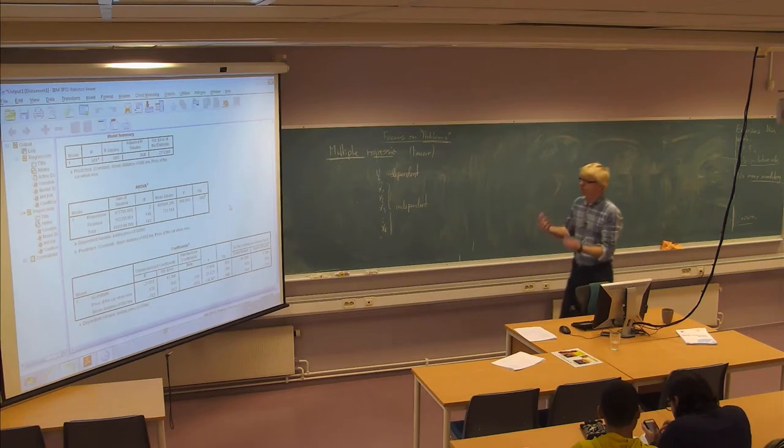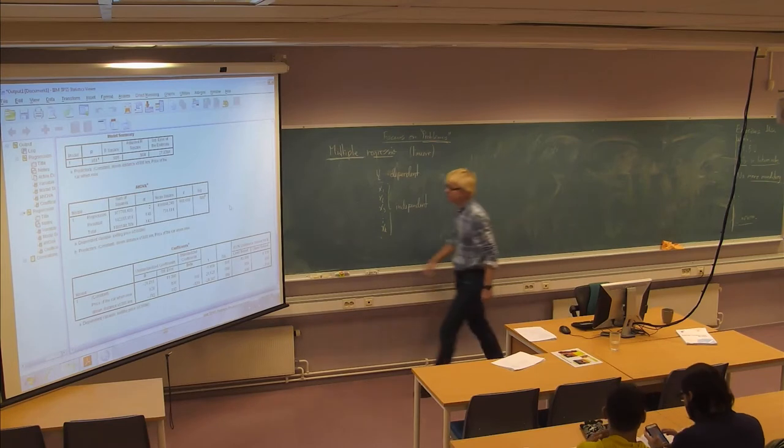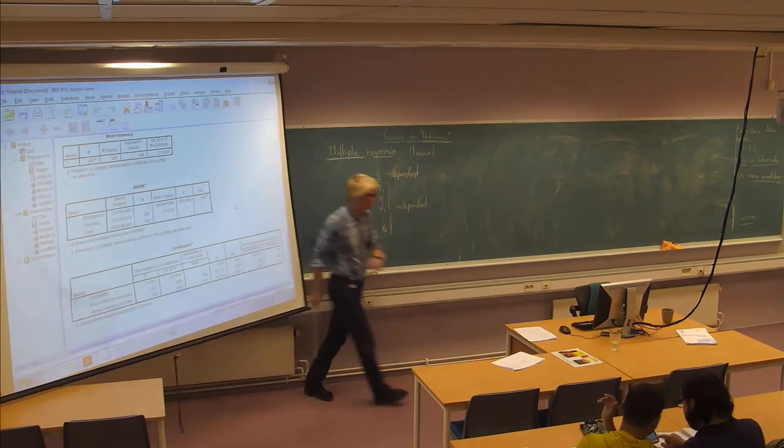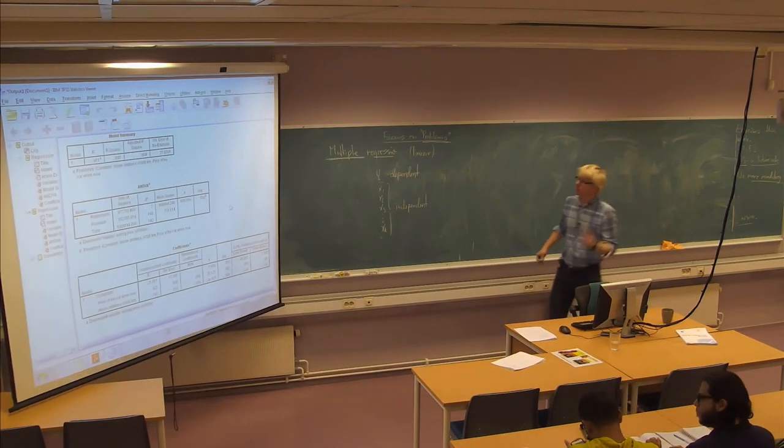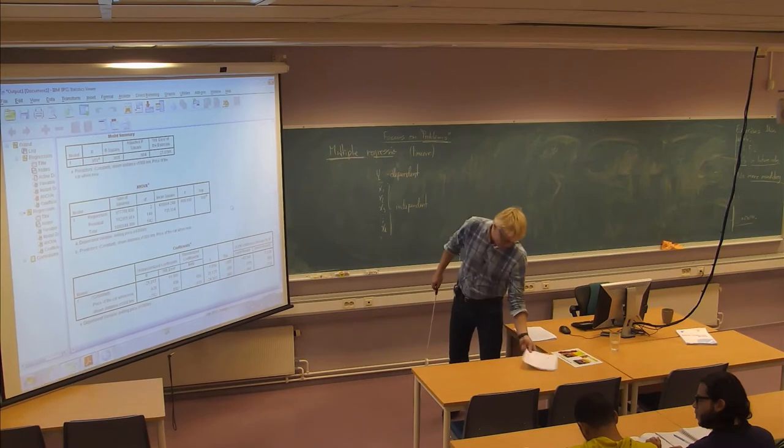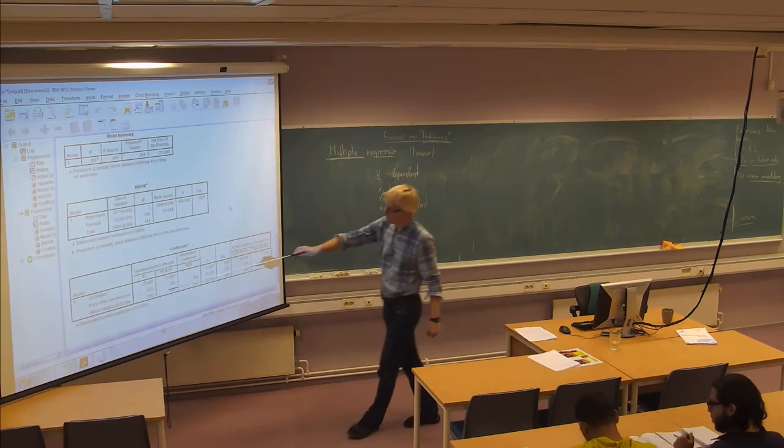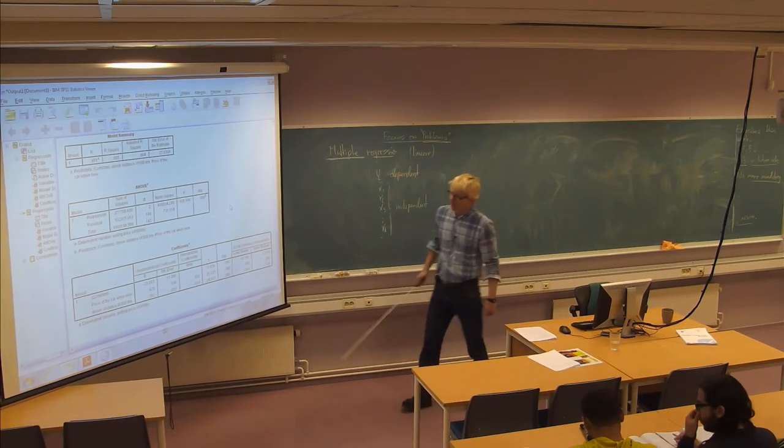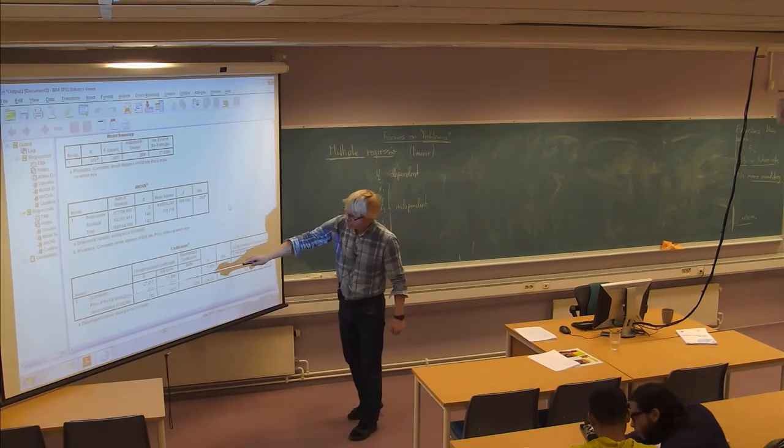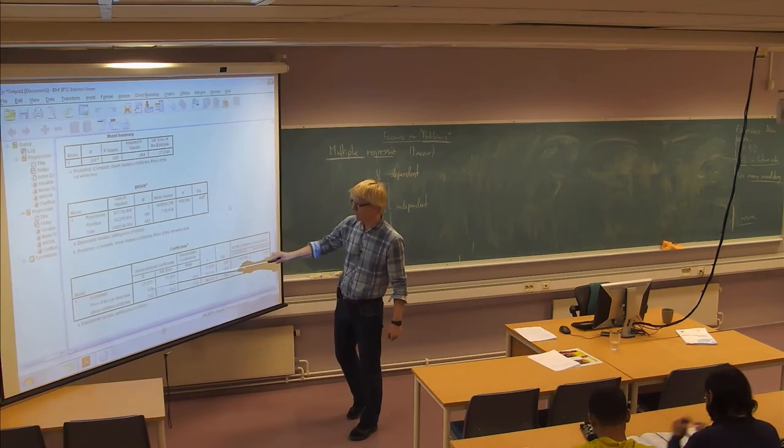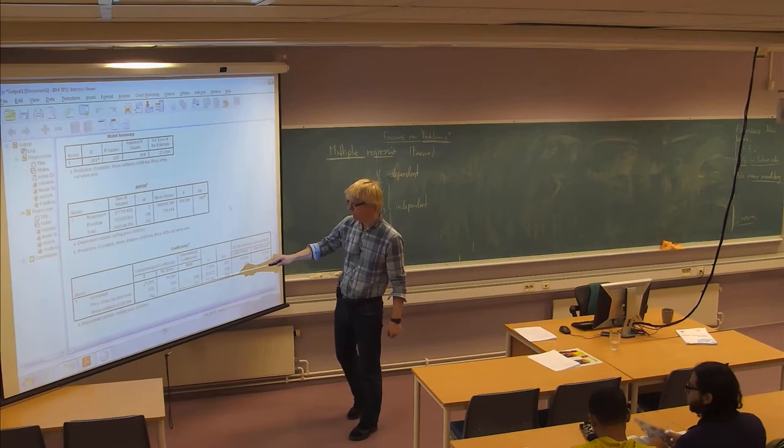So just to review a little bit the SPSS output. When we run the multiple regression it looks very much like the thing we did before, it's just that we have more X variables here. The name of the variable will come up in a list here in the coefficient estimates and then you have the estimated coefficients down here like before.